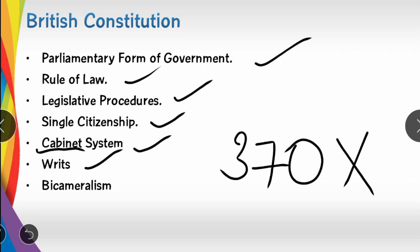The President has some special powers. We have taken the concept of the President's special powers from the British Constitution. Next is Bicameralism — the two-house system — which is also taken from the British Constitution.